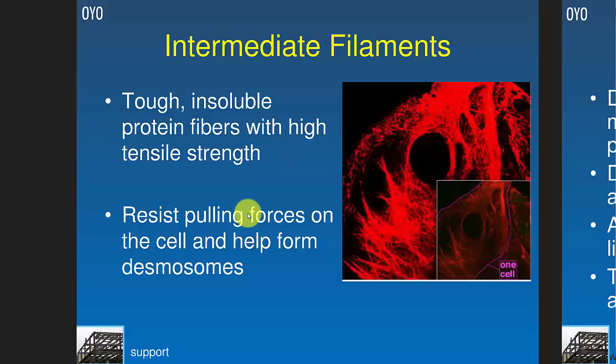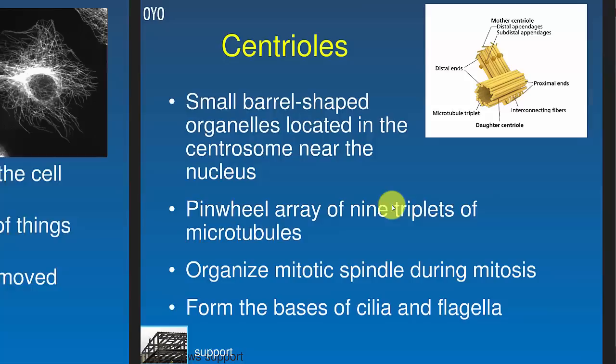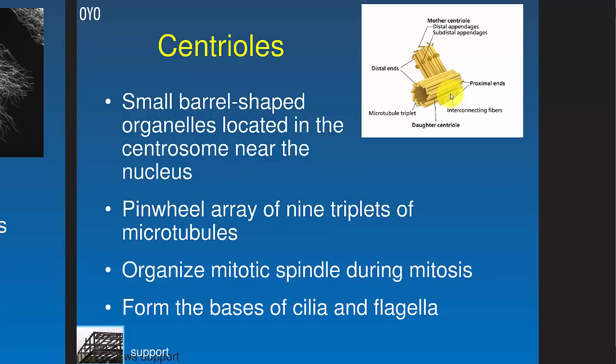Intermediate filaments stretch throughout the cell, are tough, insoluble, and have high tensile strength — they don't stretch much — allowing the cell to maintain structural integrity when physically compressed. Microtubules are the large, hollow tubes of the cytoskeleton — like railroad tracks. In a neuron that may be a meter long, microtubules move cargo from the nucleus to the end of the cell and back. They determine cell shape, form the structure of cilia and flagella, and extend from centrioles near the nucleus.